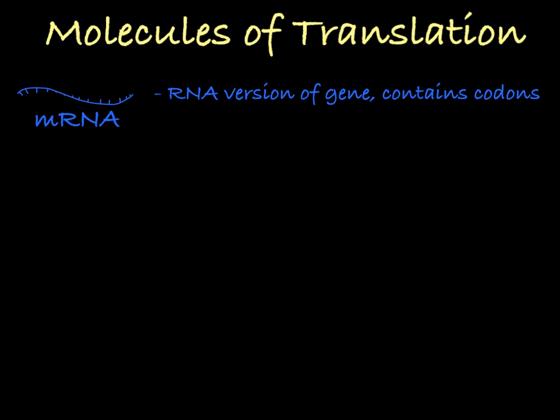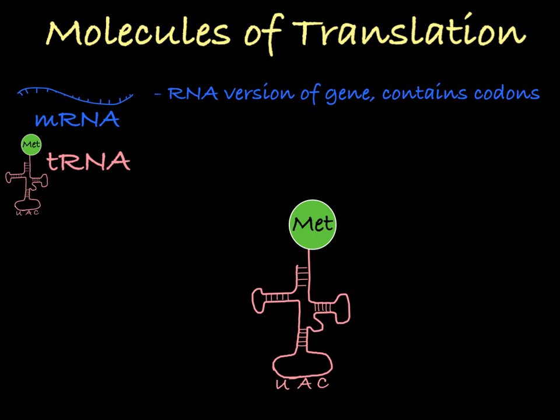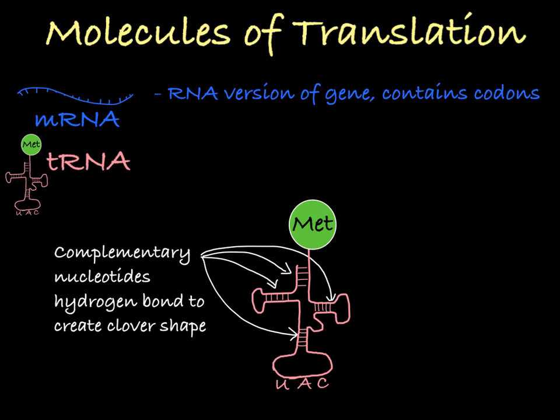Translation also requires many transfer RNA molecules, also called tRNA. The structure of a transfer RNA molecule is extremely important to its function. While it's still a single-stranded RNA molecule, it takes on a clover-like shape because it has segments of complementary nucleotides that interact with each other to create the shape.